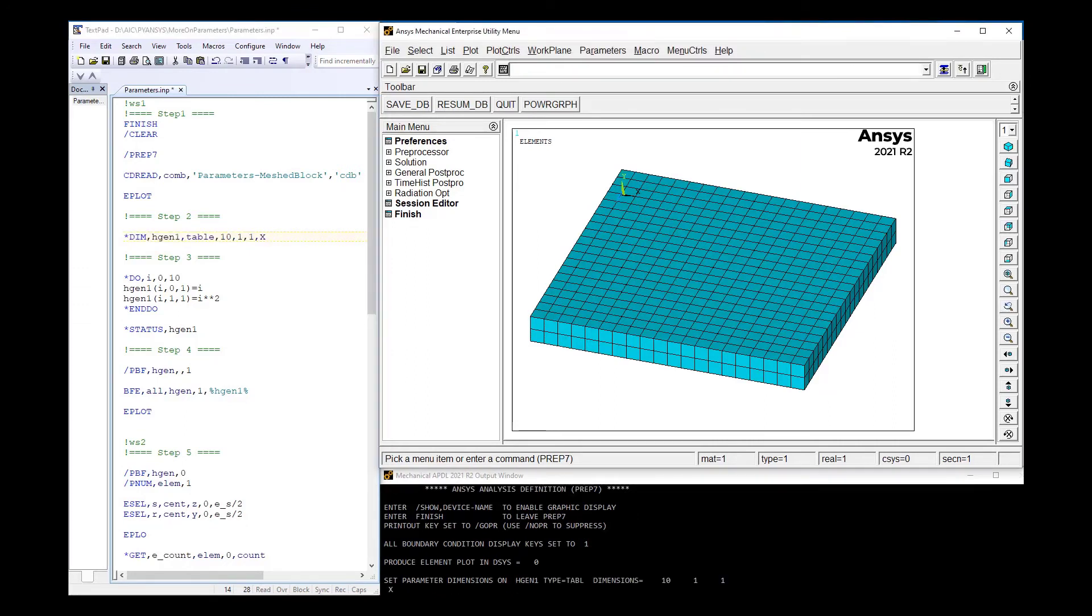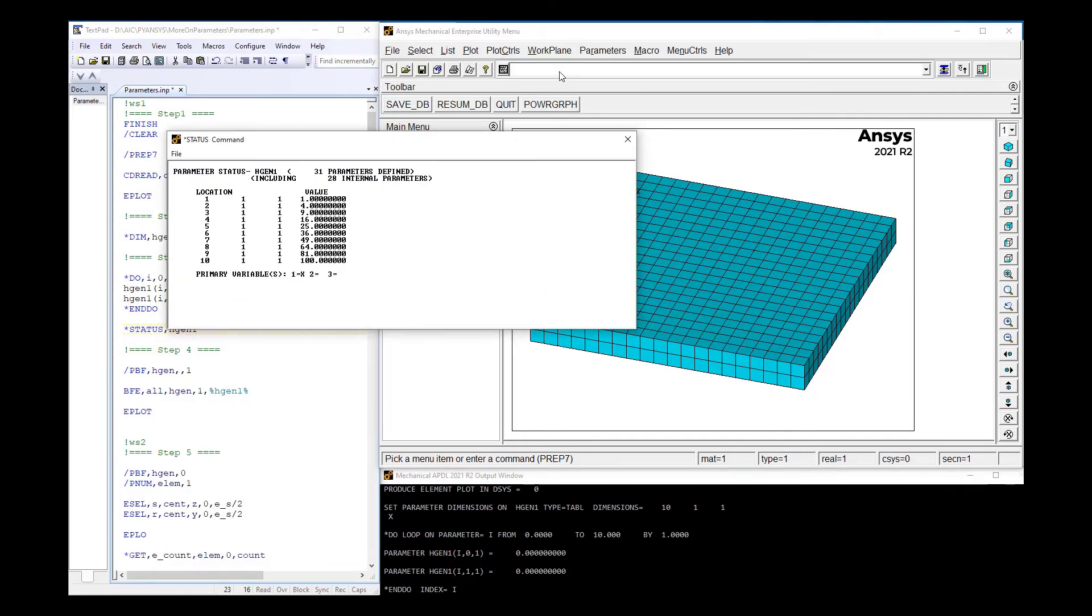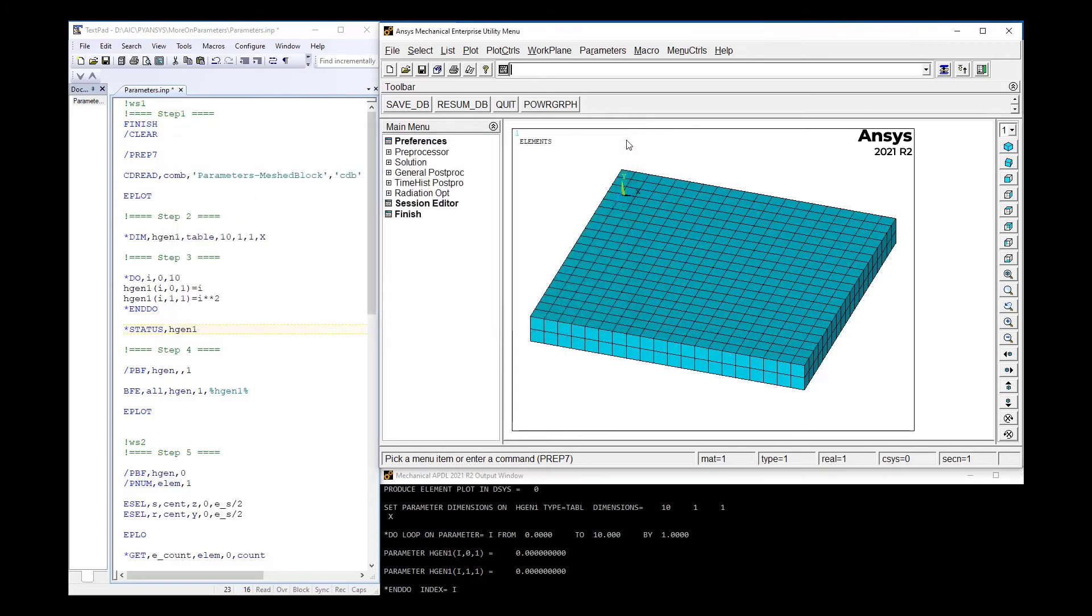Now using a *DO loop construct, we define the zeroth column with the X position and the first column with the square of the position. And then let's verify the table with the *STATUS command. As we can see, the values are the square of the locations.